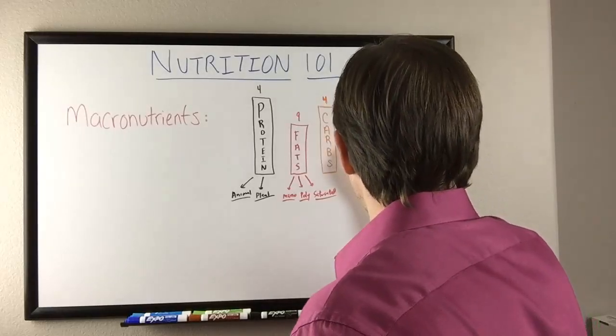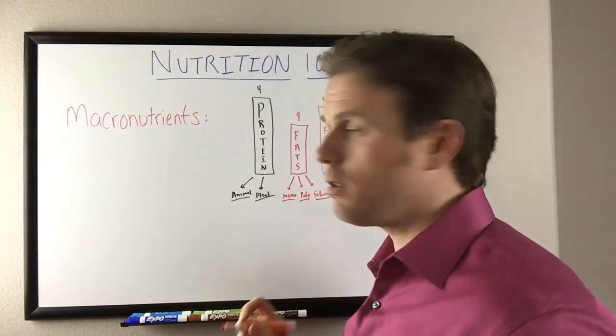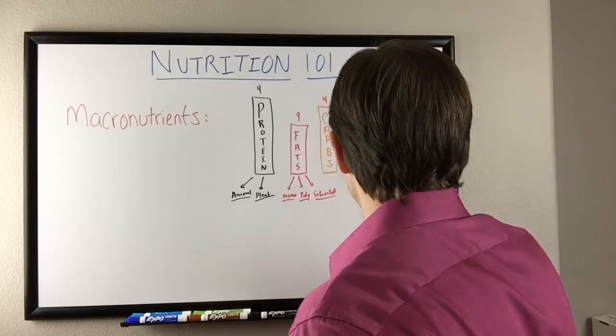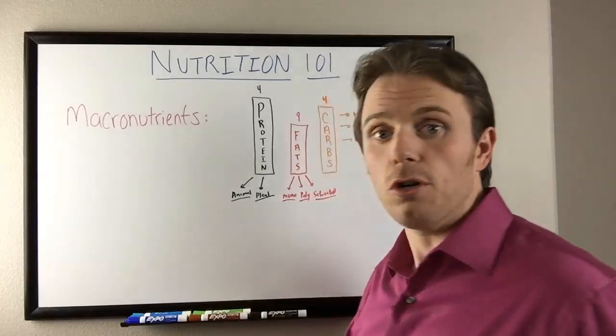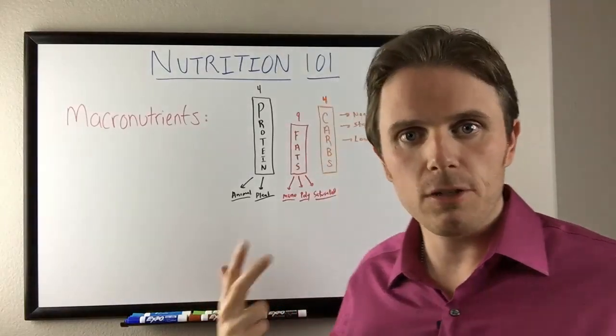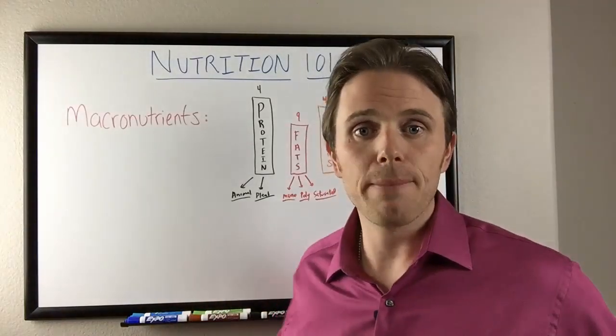Now from there, I break it down. We have fruits. So we have low sugar fruit. We have low sugar, which are going to be berries, strawberries, raspberries, passion fruit, lemon, lime, grapefruit.